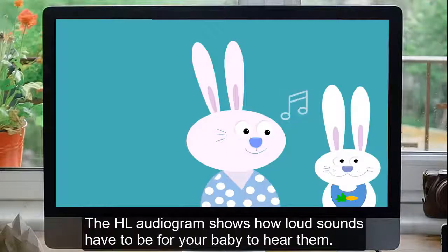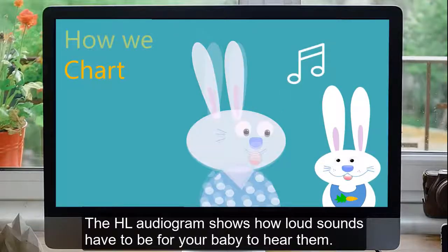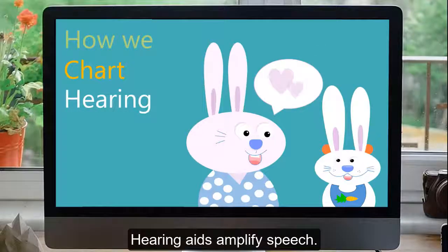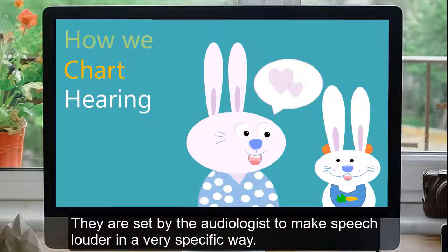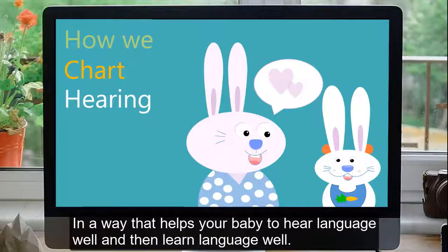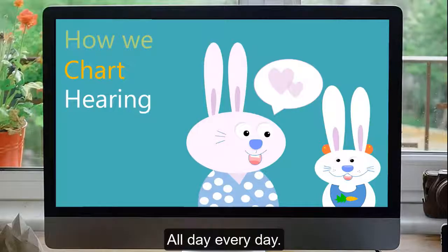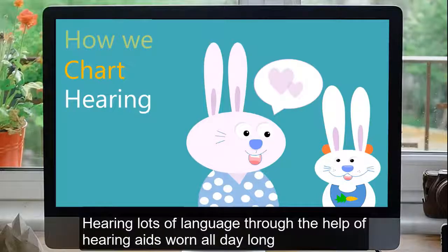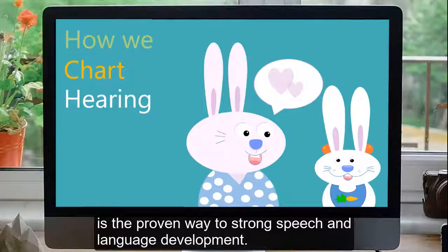The HL audiogram shows how loud sounds have to be for your baby to hear them. Hearing aids amplify speech. They are set by the audiologist to make speech louder in a very specific way. In a way that helps your baby to hear language well, and then learn language well, all day, every day. Hearing lots of language through the help of hearing aids worn all day long is the proven way to strong speech and language development.